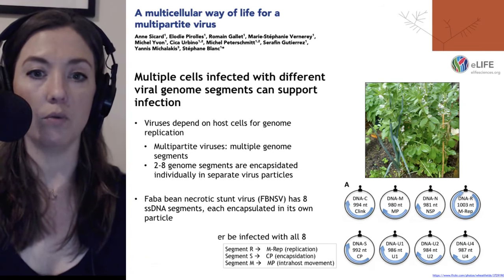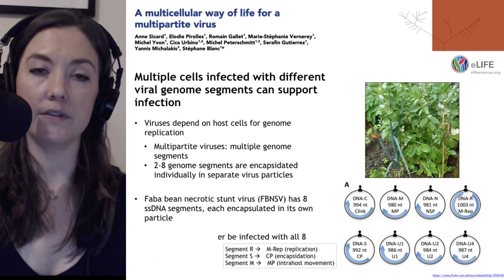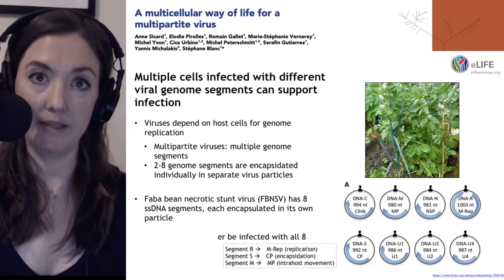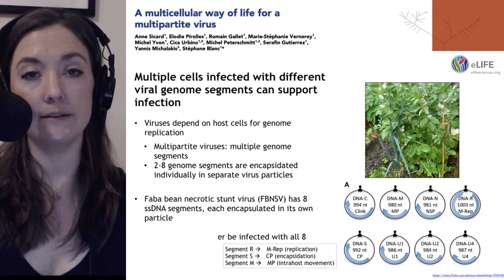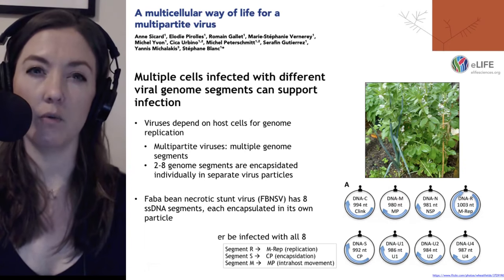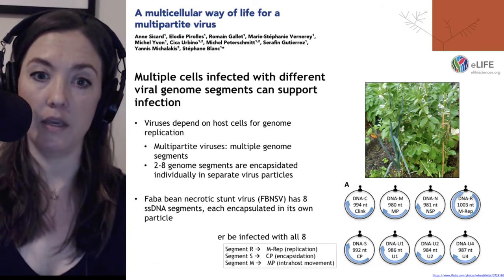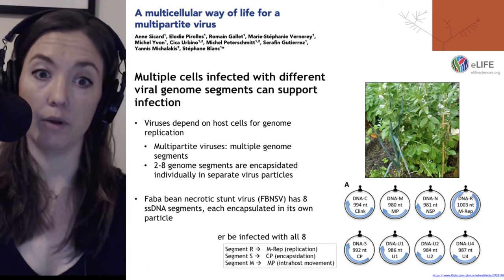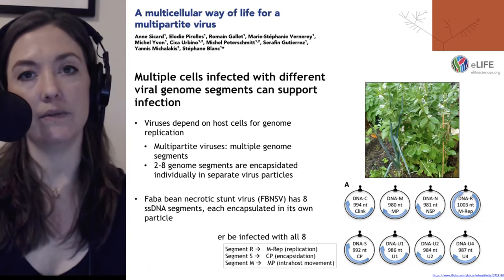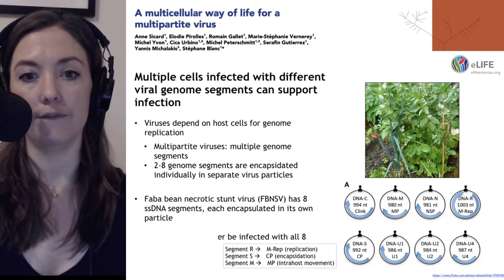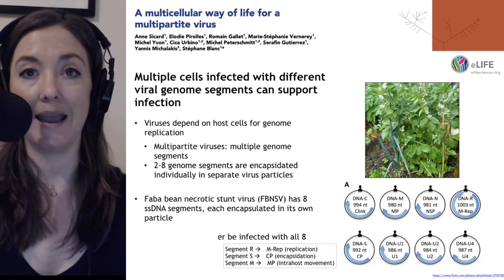So, we're going to look at some of those different segments. Pictured are the eight different genome segments of FBNSV. The important ones we'll be discussing are segment R, which encodes the MREP protein important for viral replication, and segment S, which encodes the CP protein important for viral encapsidation.